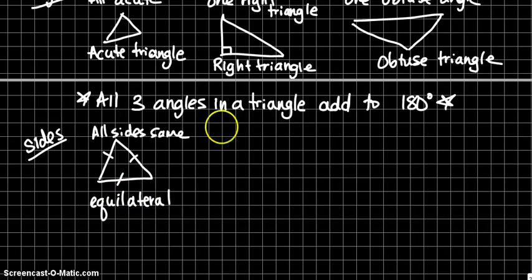If you have a triangle where two sides are the same, it's called isosceles.